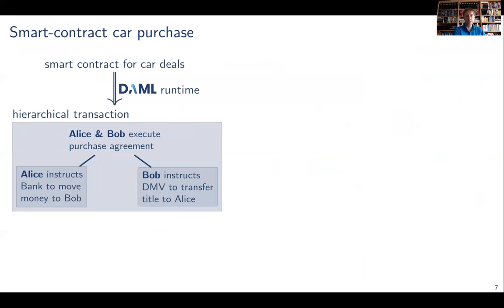So how does this look like? We'll look at a very simple example of a car deal. So suppose Alice wants to buy Bob's car. They have a smart contract for car deals that they agreed on. And that contract could be written in DAML, the open source smart contract language that we develop, essentially based on Haskell, with an interpreter, the DAML runtime. That then translates the code into what is a hierarchical transaction.